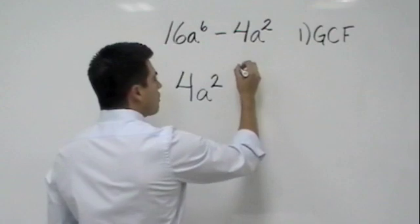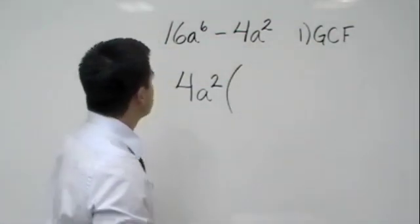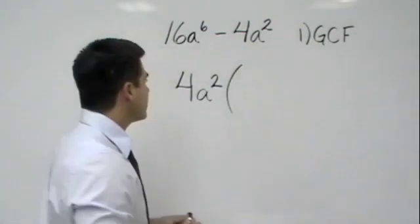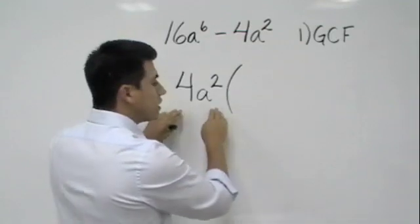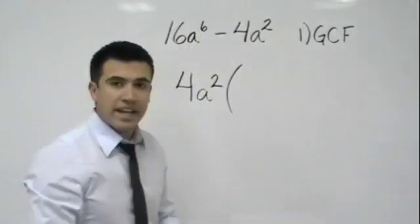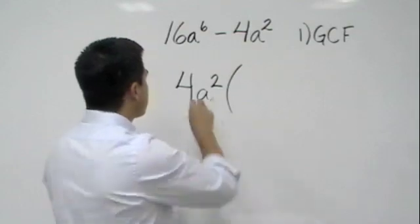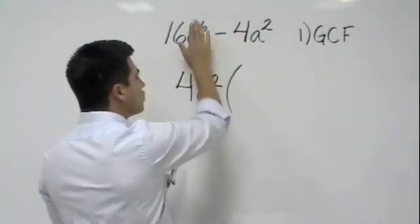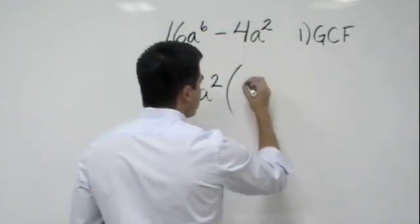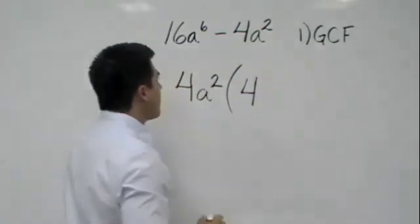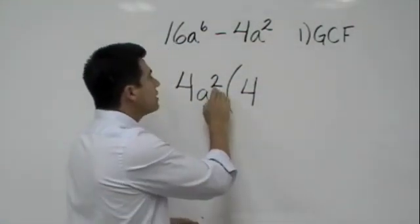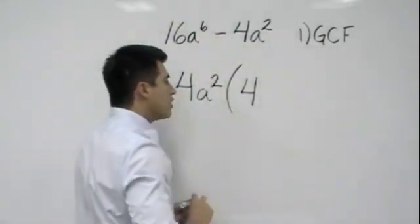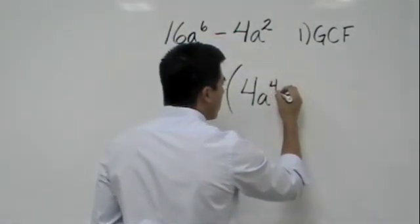Now, we go ahead and write what's left over once we factor out, and the way we can do that is ask ourselves, 4a squared times what will give me 16a to the sixth power? Well, remember, we just ask ourselves by looking at the numbers, 4 times what gives me 16, and that's 4. And then, we have a squared, but we need a to the sixth power, so we would want to multiply that by a to the fourth.